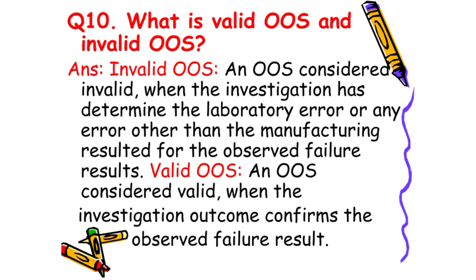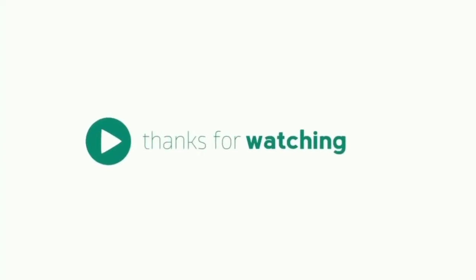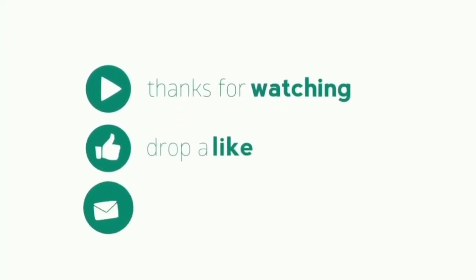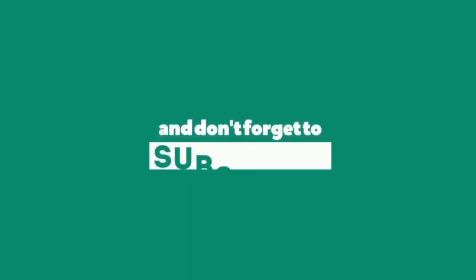And the last question: What is valid OOS and invalid OOS? The answer is: invalid OOS — an OOS is considered invalid when the investigation has determined that a laboratory error, or any error other than a manufacturing error, resulted in the observed failure. Valid OOS — an OOS is considered valid when the investigation outcome confirms the observed failure results.